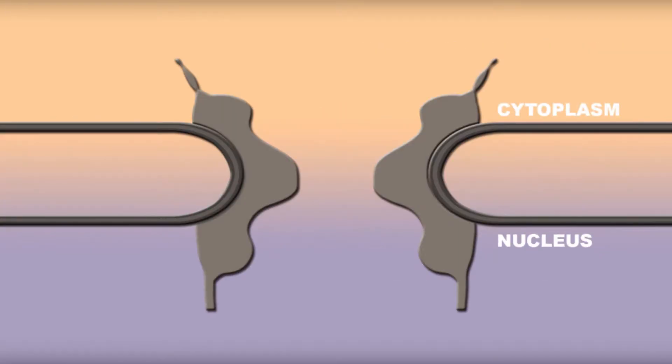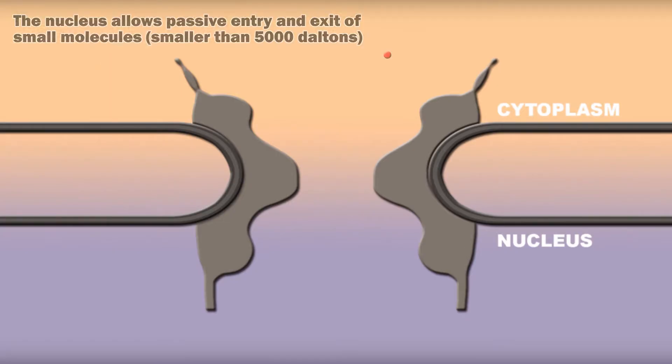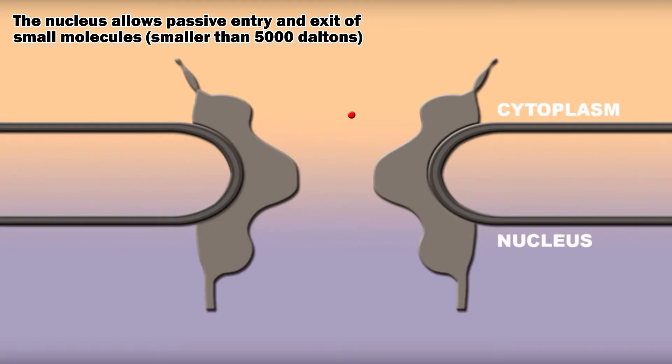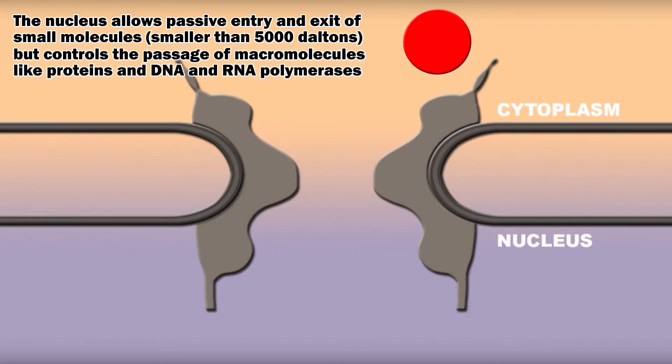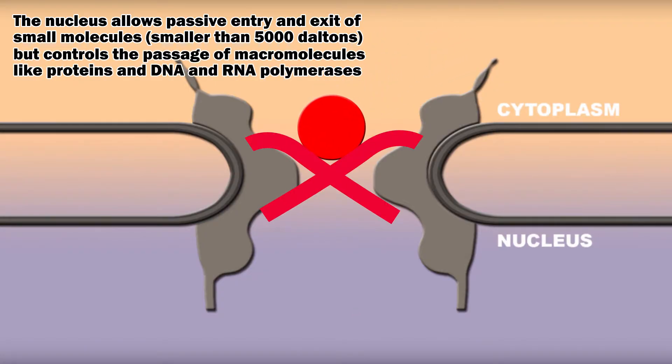The nucleus has a double membrane surrounding it called the nuclear envelope. The nucleus allows passive entry and exit of small molecules, smaller than 5,000 Daltons, but controls the passage of macromolecules like proteins, many of which are in the range of 25,000 Daltons, as well as DNA and RNA polymerases, many of which are around 100 to 200,000 Daltons.